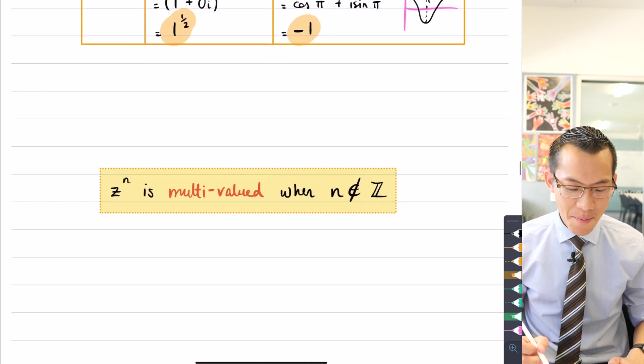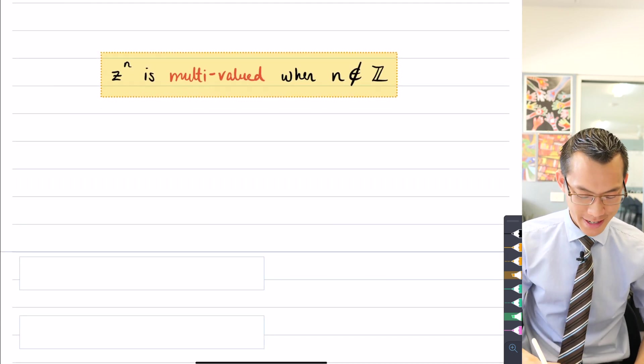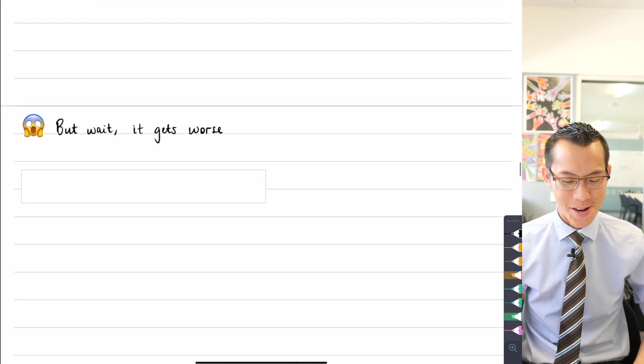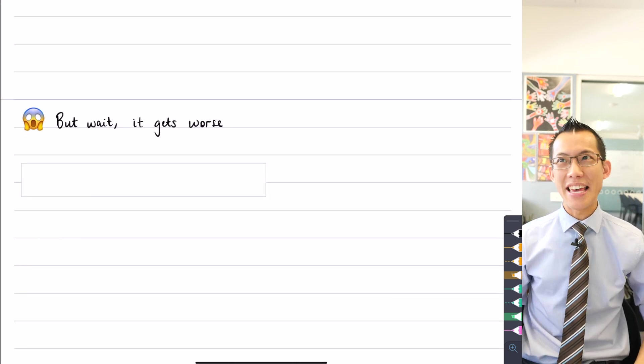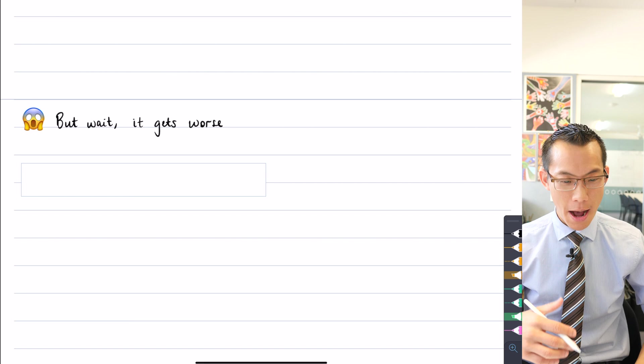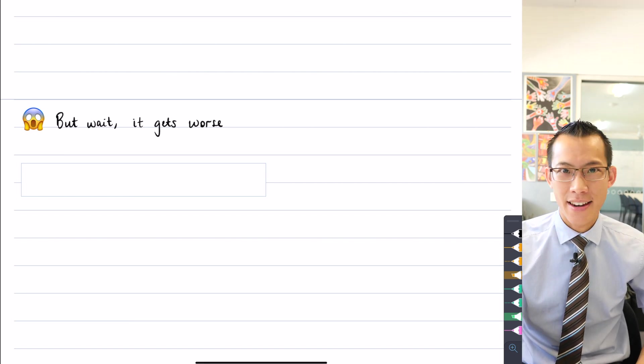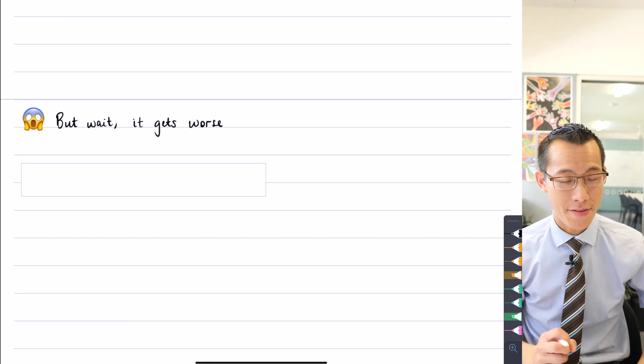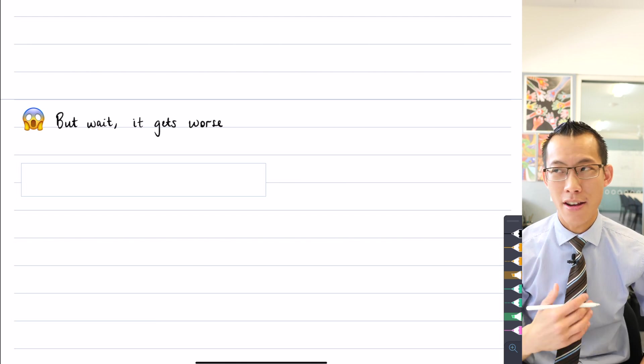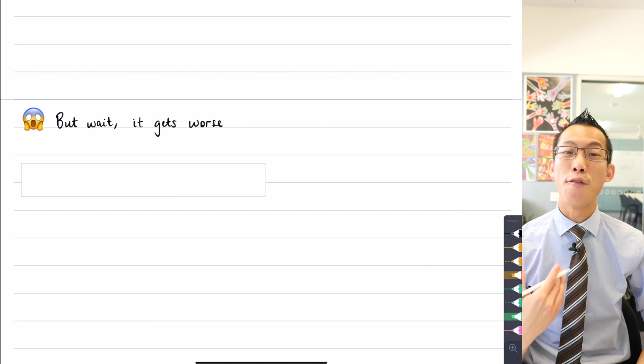But there's actually an even bigger problem. But wait, it gets worse. Not only can z to the n be multivalued, z to the n can actually take on infinite values if you choose an appropriate or you might learn to think of it as an inappropriate value for n.